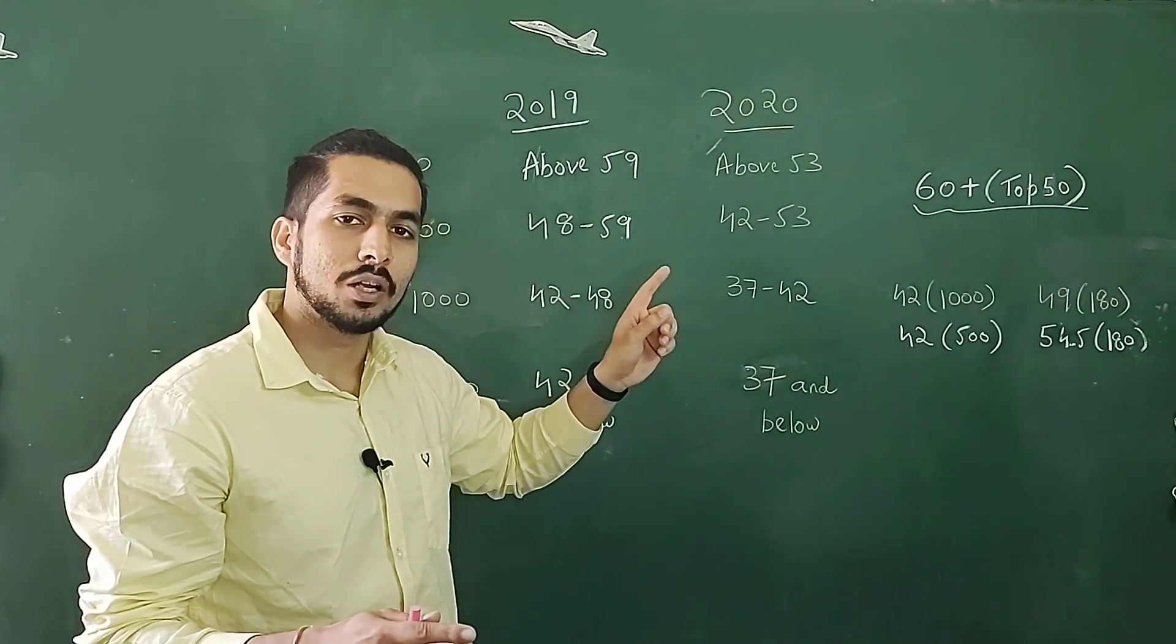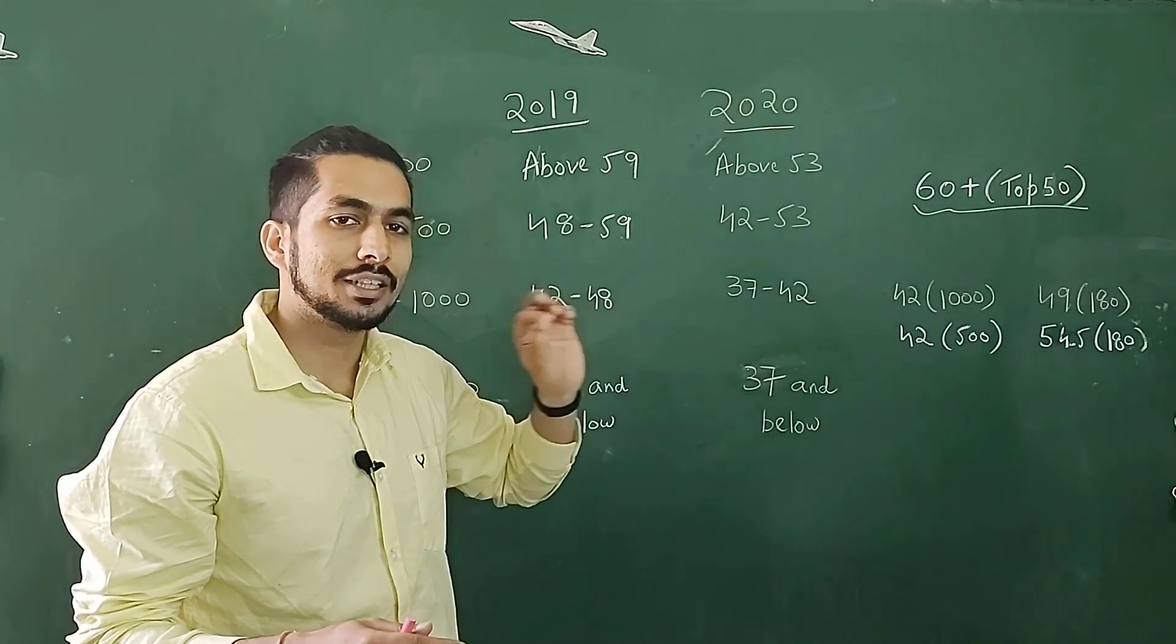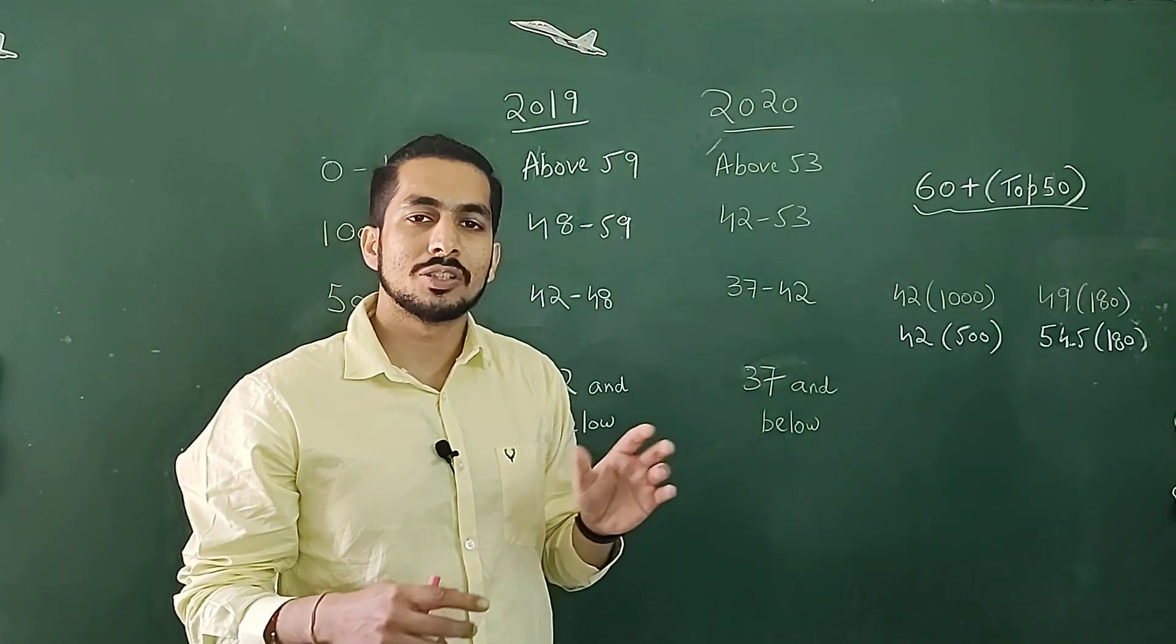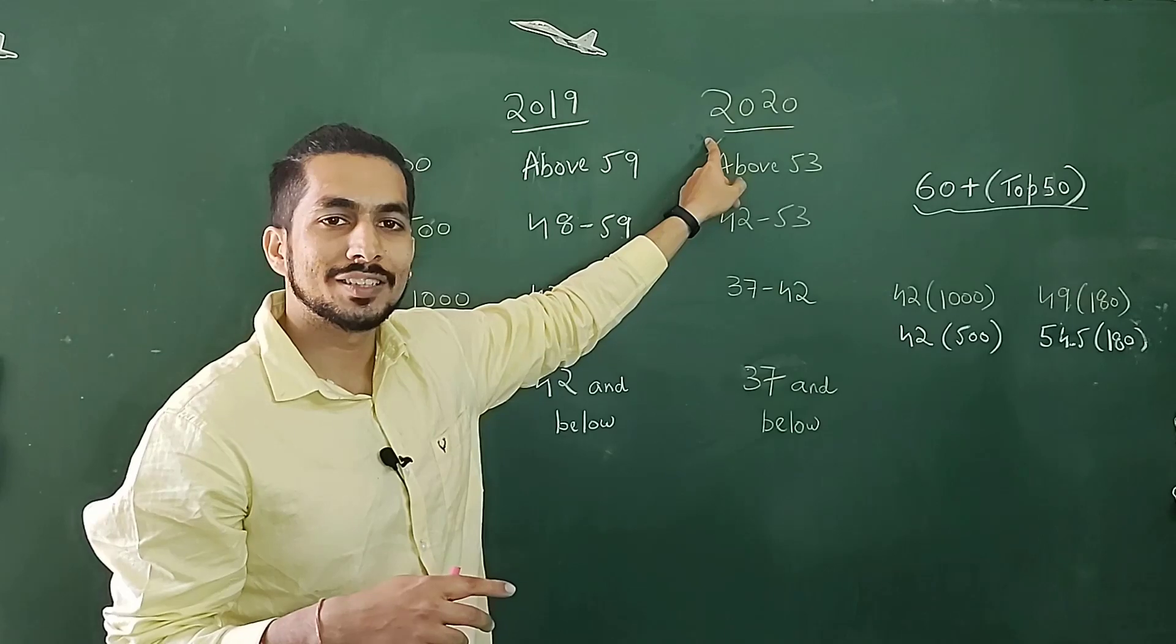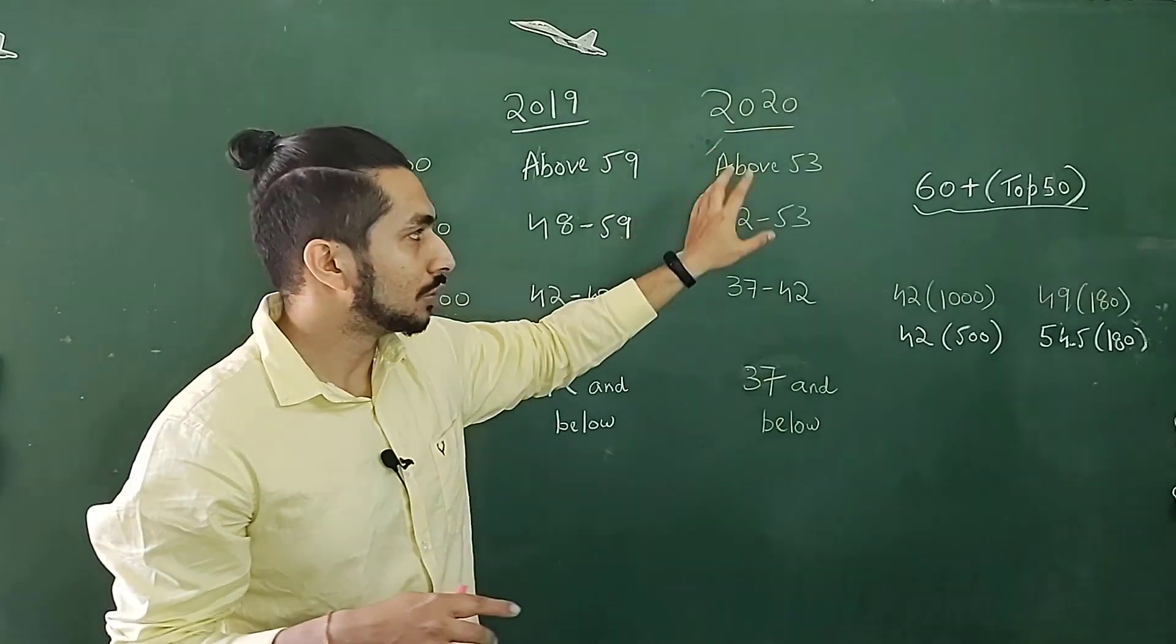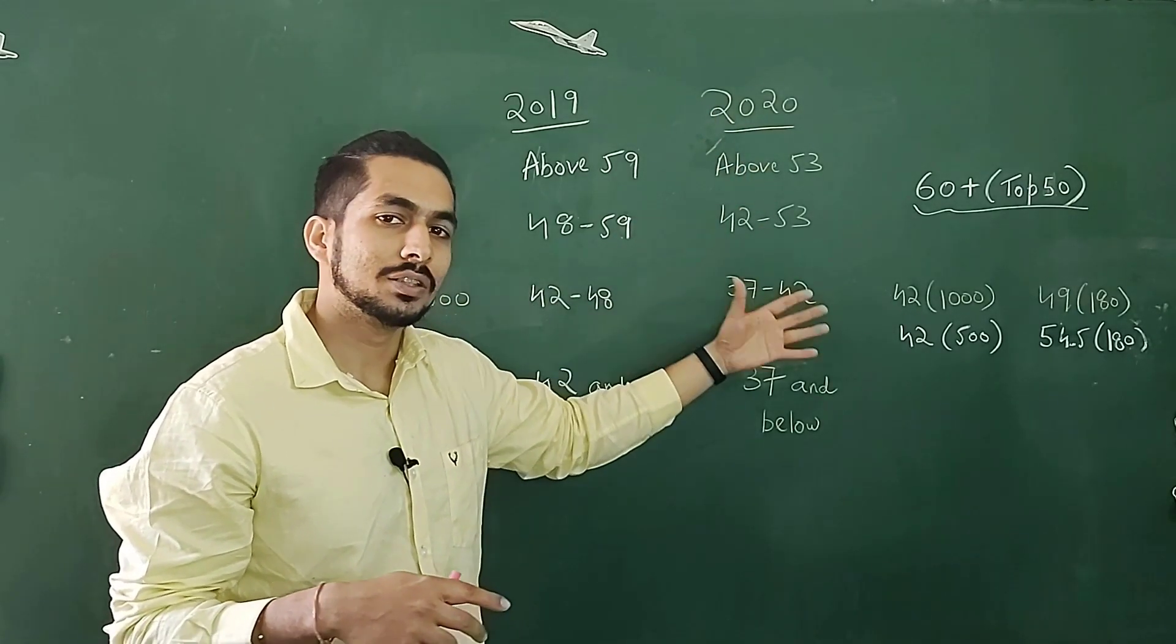The lowest cutoff was in 2017, which was exactly 25, but the number of aspirants that gave that examination were too less, around 15,000. And if you see the GATE 2020 examination, the number of aspirants were 24,000. So this will give us a more accurate and precise result.